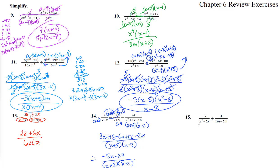Number 15 — factor both denominators: first is x times x minus 5, second is m times x minus 5. So the first fraction needs an m and the second needs an x. The numerator becomes negative 7m plus 4x, all over the common denominator mxz times x minus 5.